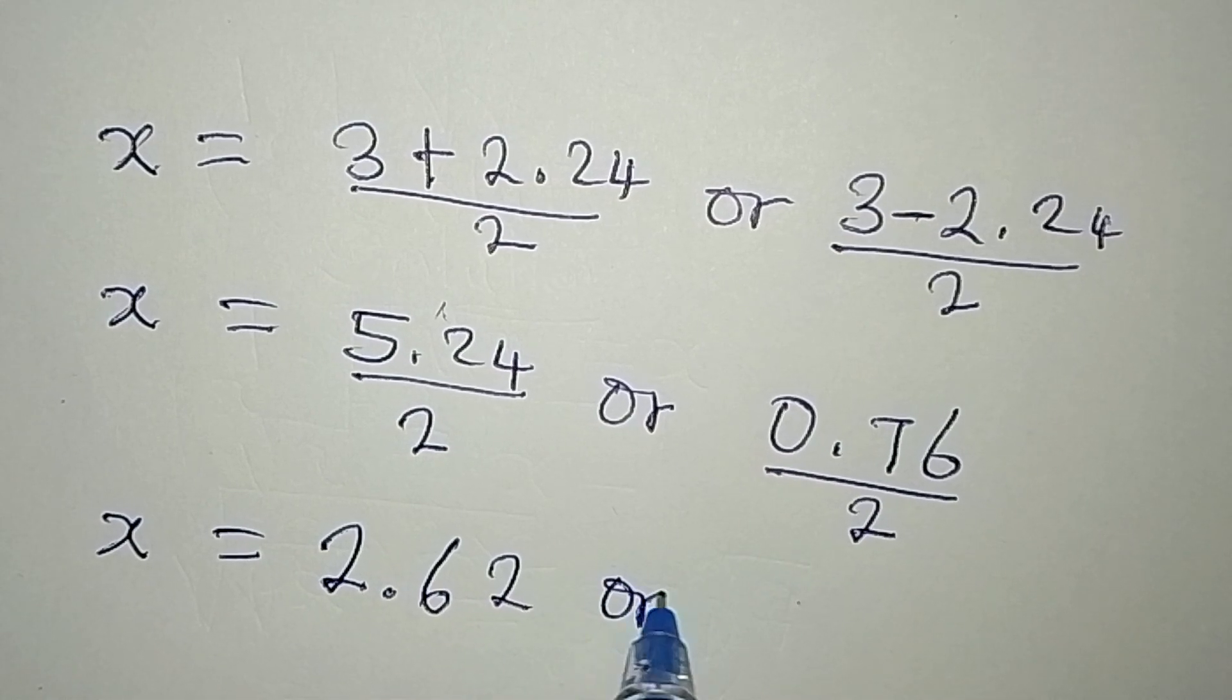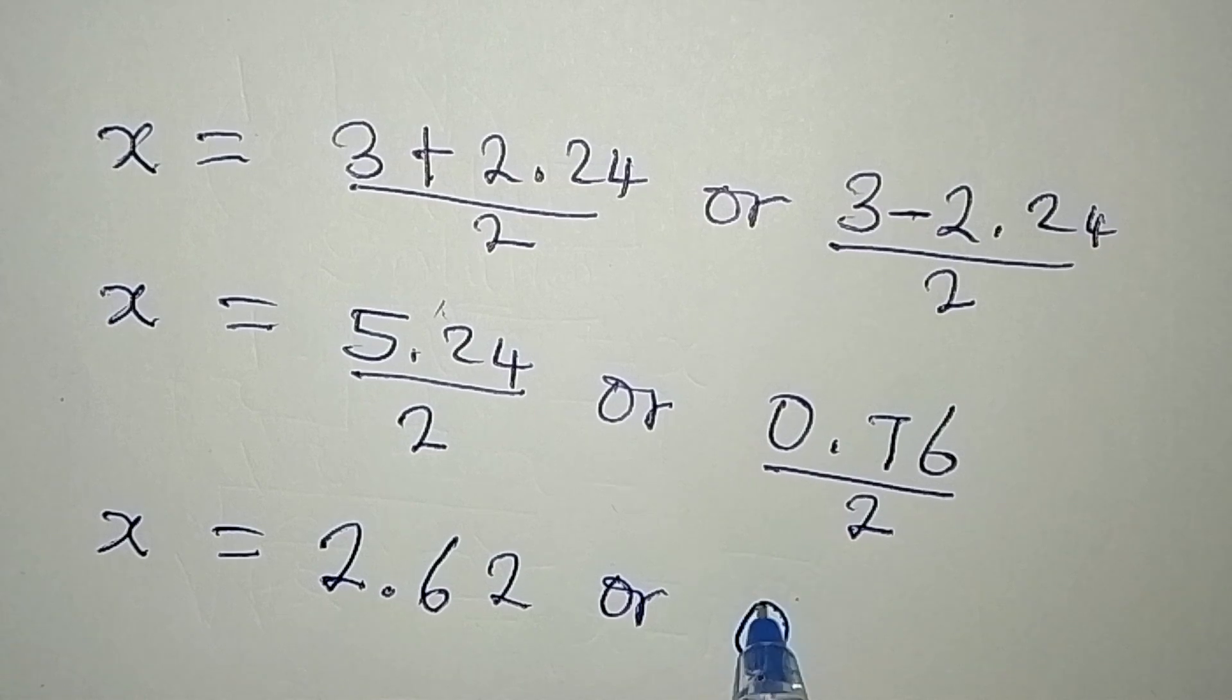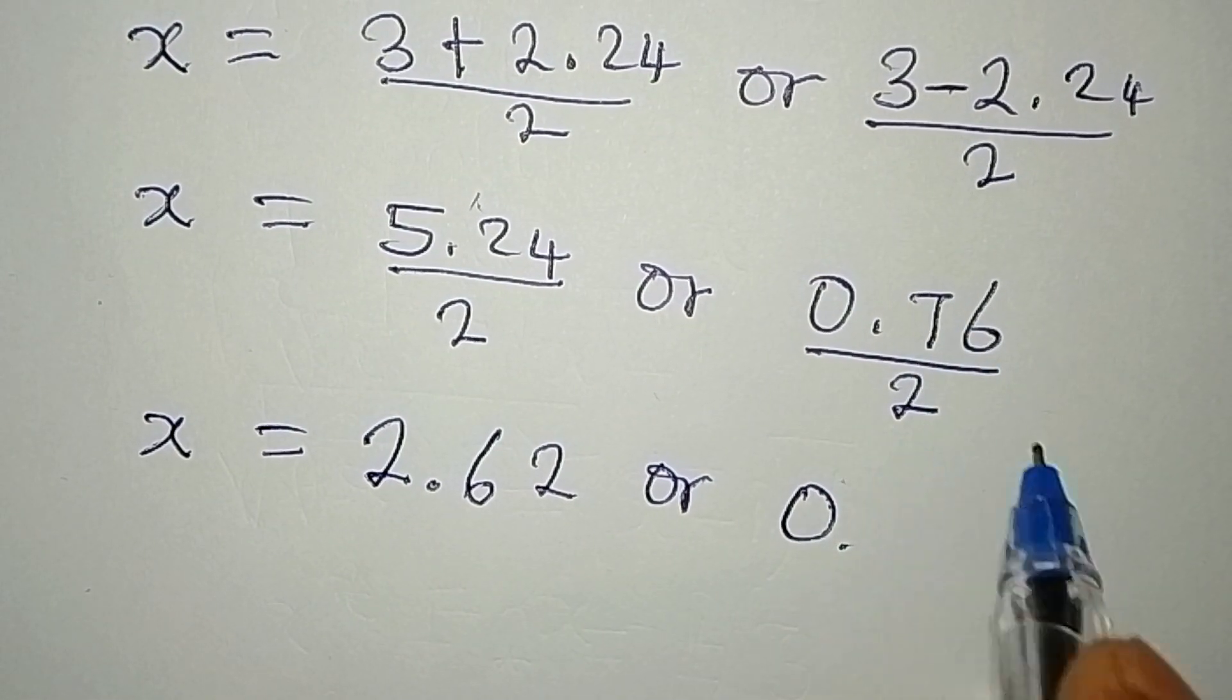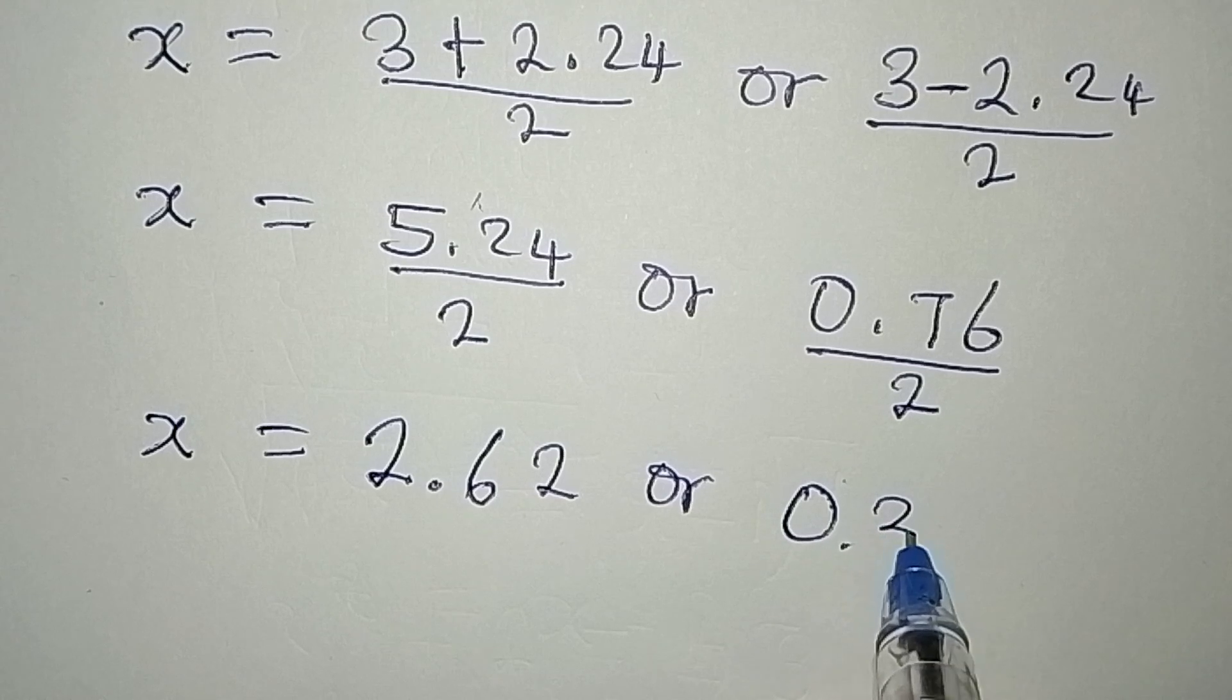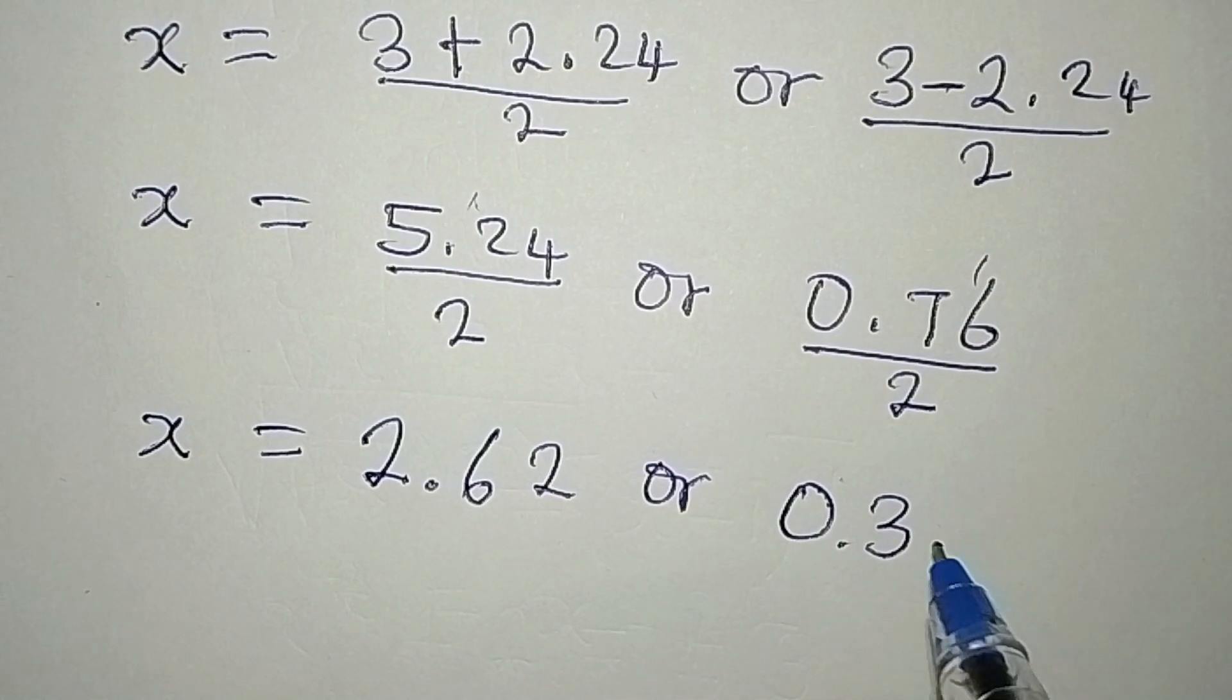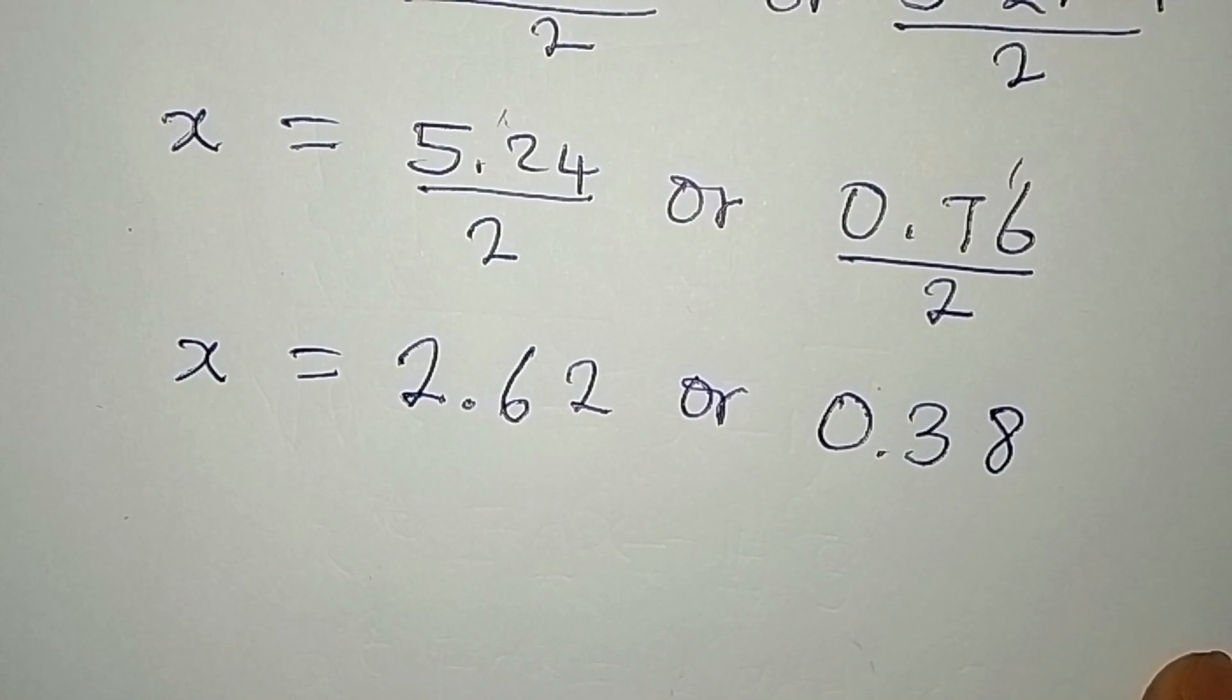Or on this side, 0 divided by 2 will give 0. Then decimal. 7 divided by 2 is 3. Remember 1. Making this to be 16. 16 divided by 2 will give 8. So this will be the two values of x.